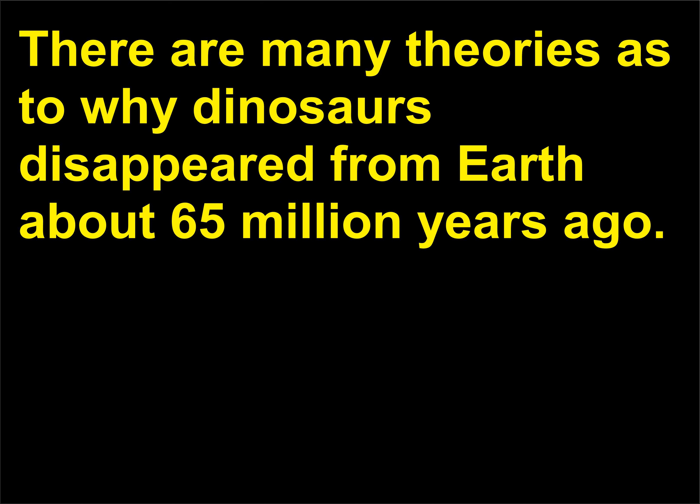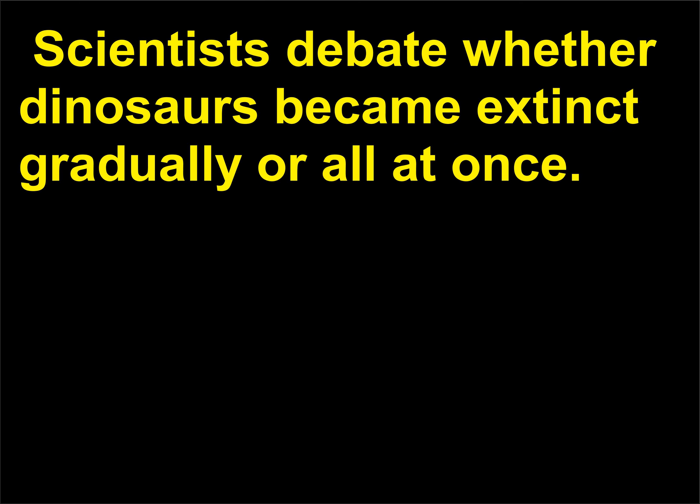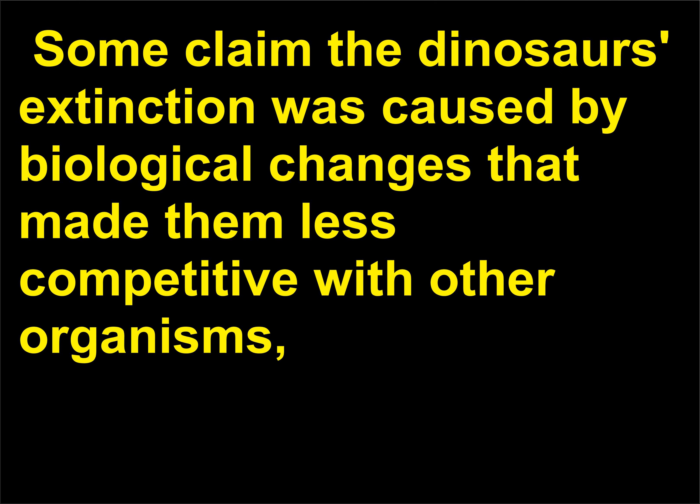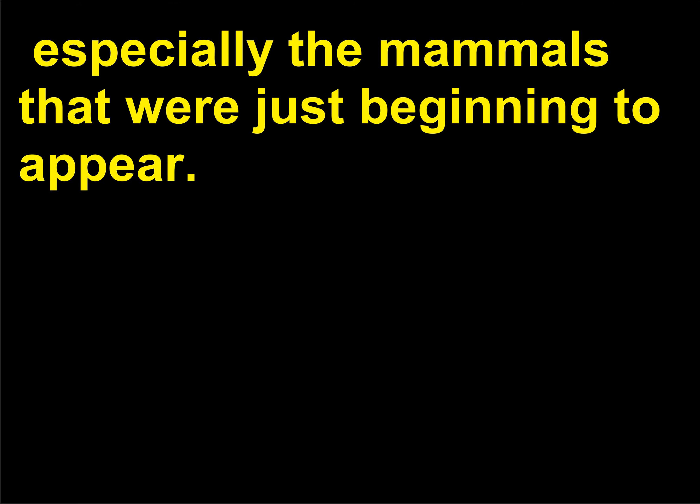Why did dinosaurs become extinct? There are many theories as to why dinosaurs disappeared from earth about 65 million years ago. Scientists debate whether dinosaurs became extinct gradually or all at once. The gradualists believe that the dinosaur population steadily declined at the end of the Cretaceous period. Some claim the dinosaurs' extinction was caused by biological changes that made them less competitive with other organisms, especially the mammals that were just beginning to appear.